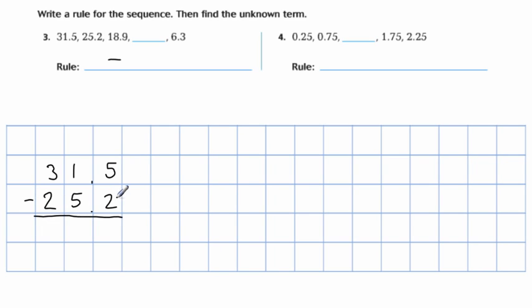All right, 5 minus 2 is 3. Now 1 minus 5, that isn't going to work. So I need to regroup 11 minus 5 is 6. Make sure you have the decimal place in there. And then 2 minus 2 is 0. So the rule is, it's subtracting every time because the number is getting smaller. And then the second part of this is finding out by how much is it being subtracted from one step to the other.